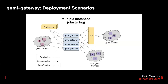This second deployment scenario is the more typical scenario where you require clustering and high availability. Here, there are multiple GNMI Gateway instances coordinating target connections amongst themselves as well as replicating GNMI data to each other. The GNMI clients on the right-hand side make connections through an NLB or network load balancer that distributes client connections amongst the cluster instances. This NLB could be a Layer 4 load balancer such as we use, a Layer 7 load balancer, or DNS load balancing. In a practical deployment, the GNMI Gateway instances could be Docker containers, cloud instances, or servers in a data center.